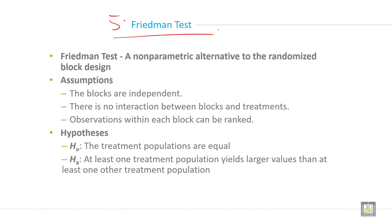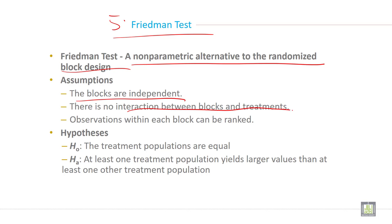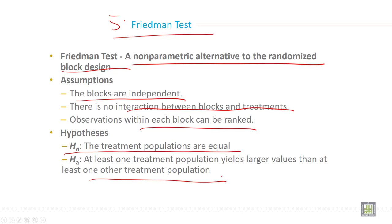The Friedman test is a non-parametric alternative to the randomized block design, and there are some assumptions: the blocks are independent, there is no interaction between block and treatment, and observations within each block can be ranked. The null hypothesis is that all treatment populations are equal, and the alternative hypothesis is that at least one treatment population yields larger values than at least one other treatment population.